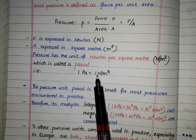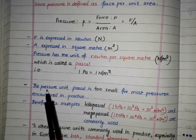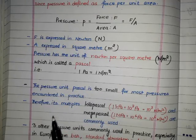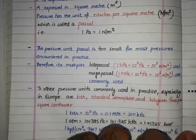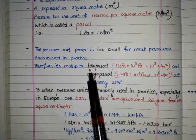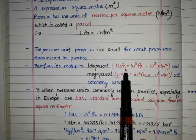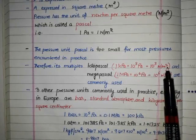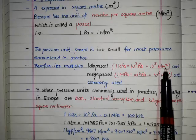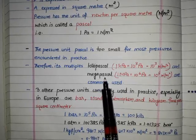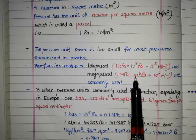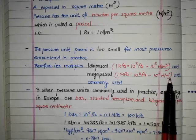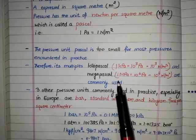One Pascal equals one Newton per square meter. The Pascal unit is too small for most pressures encountered in practice, therefore its multiples are commonly used: one kilopascal equals 10 raised to power 3 Pascal, which equals 10 raised to power 3 Newton per square meter, and one megapascal equals 10 raised to power 6 Pascal, equal to 10 raised to power 6 Newton per square meter.